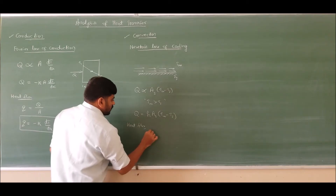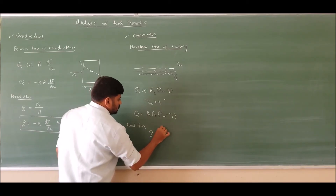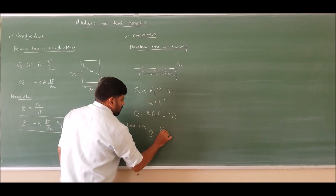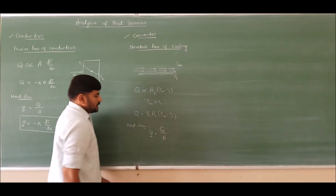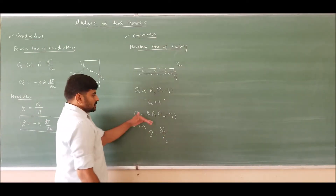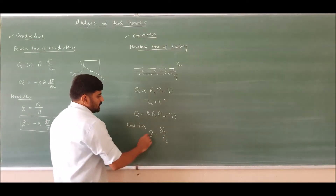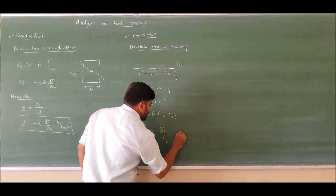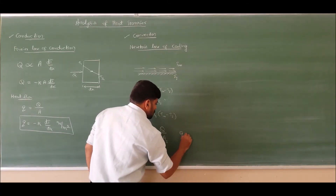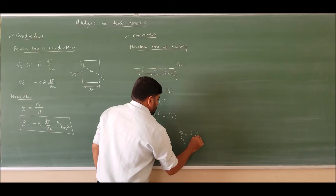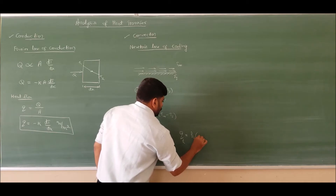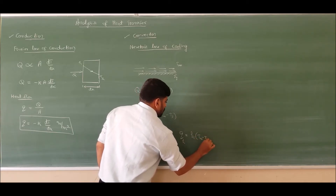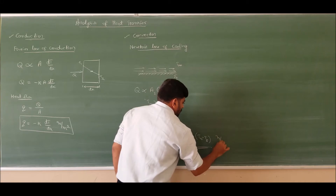The heat flux due to convection — since heat flux is the rate of heat transfer divided by area — is given by q_convection = h × (T_infinity − T_s), and its unit is Watts per meter squared.